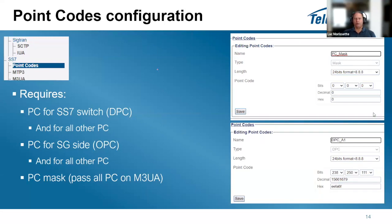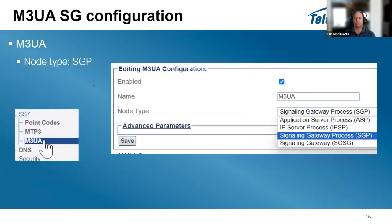At minimum, you need a point code for the SS7 switch side — the traditional TDM — called a DPC, and another point code for the signaling gateway side called an OPC. You can configure multiple DPCs and OPCs depending on your setup. PC mask is not necessary for signaling gateway configuration but can be used in other configurations like SGSG mode.